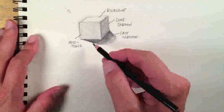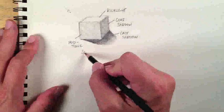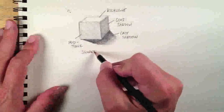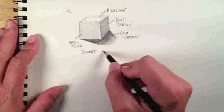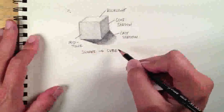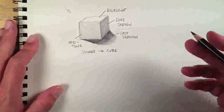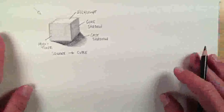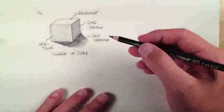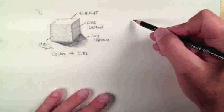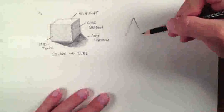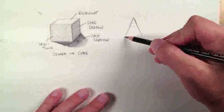These areas work together to create the illusion of form on a two-dimensional surface. In this case, we've taken a square — a two-dimensional shape — and turned it into a cube. Now let's take a look at another shape and turn it into the illusion of form.